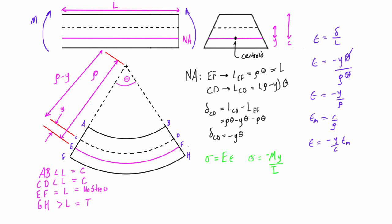The maximum stress is σ_max = Mc/I. We can have an absolute maximum stress, or separate maximum compressive and maximum tensile stresses. This distinction is important when dealing with concrete beams, which are very weak in tension. We can also write stress at any point as negative y over c times the maximum stress. These are called the elastic flexure formulas — important formulas found in any textbook on this subject.